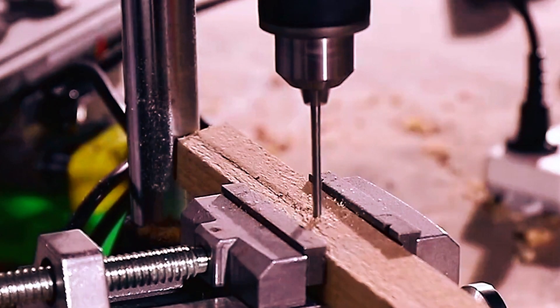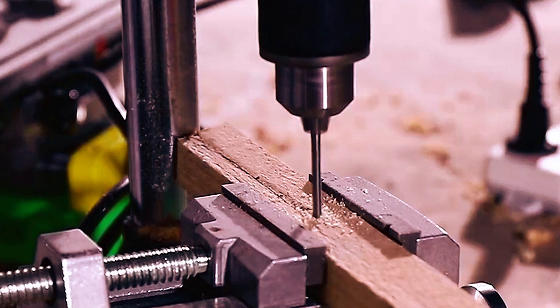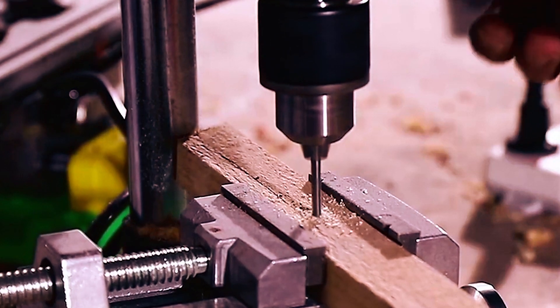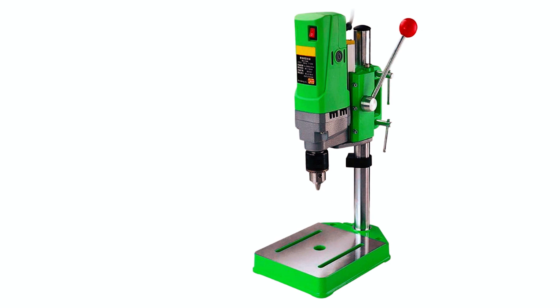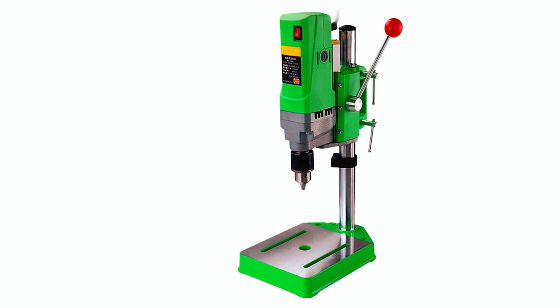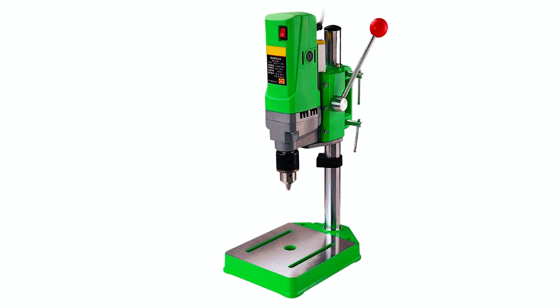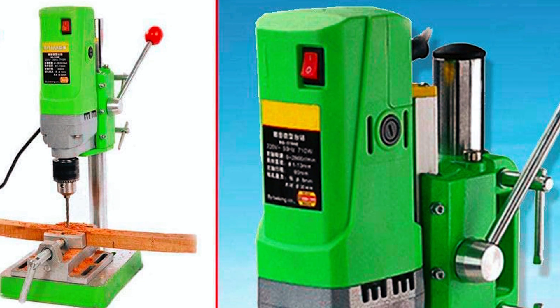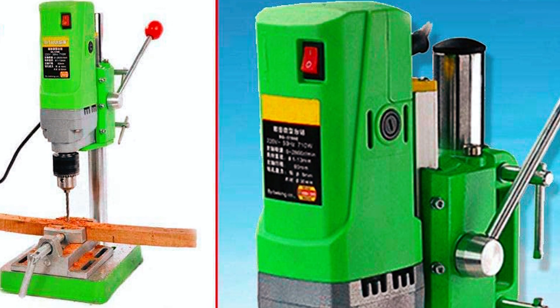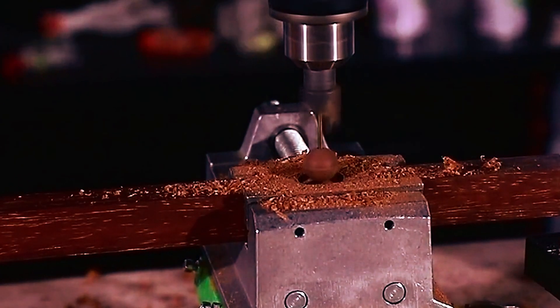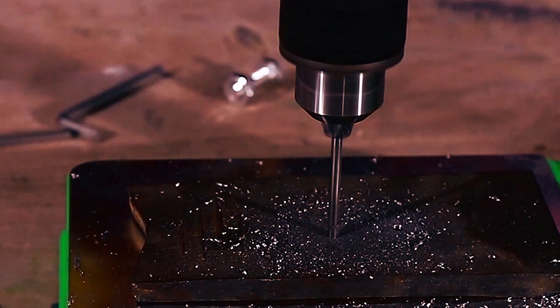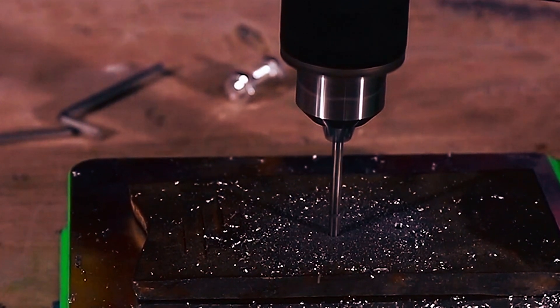Additionally, the machine features an adjustable speed control, allowing users to select the perfect speed for their specific task. In conclusion, the Minic Bench Drill Stand is a compact and versatile mini drilling machine that offers a range of features and functions that are ideal for both professionals and hobbyists alike. With its infinite speed selection and stable cast iron base, this drill press is a great option for anyone looking for a compact and accurate drilling machine.